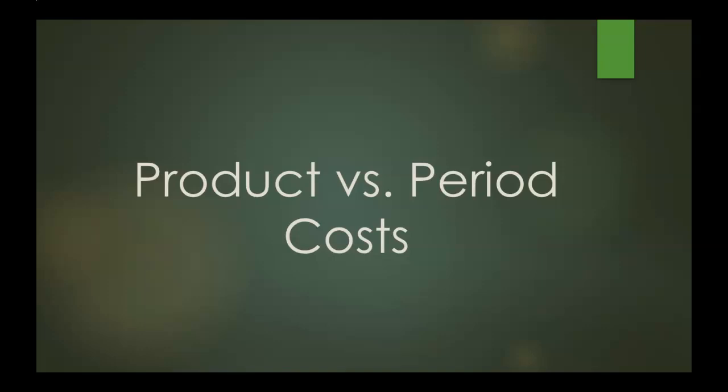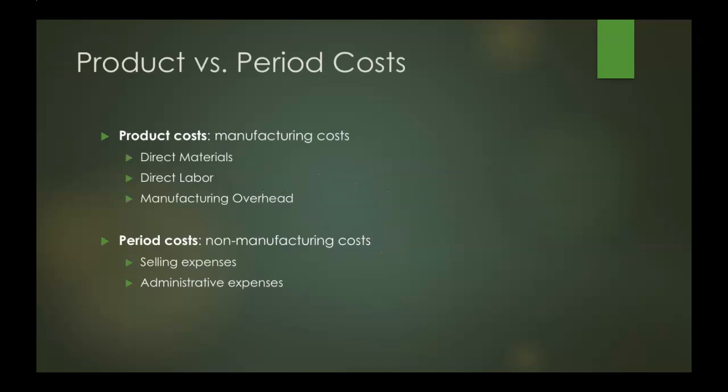Let's talk about the difference between product costs and period costs. A product cost is a manufacturing cost — so those are your direct materials, direct labor, and manufacturing overhead.